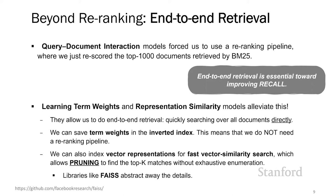Specifically, when we learn term weights, we can save these weights in the inverted index, just like with BM25, and that allows us to obtain fast retrieval. When we learn vector representations, we can index these vectors using libraries for fast vector similarity search, like FAISS. This relies on efficient data structures that support pruning — basically finding the top-K matches, say the top 10 or top 100, without having to exhaustively enumerate all possible candidates. The details of search with these pruning data structures is beyond our scope, but it's really useful to be aware of this important capability for end-to-end retrieval.